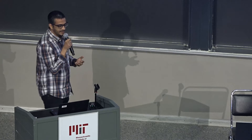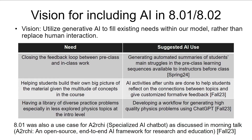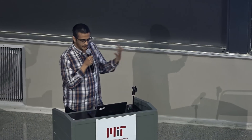We came up with a few gaps or needs that we wanted to see if generative AI would help us with. I'll focus on these three needs: first, closing the feedback loop between the pre-class and the in-class portion of the course; second, helping students develop their own big picture of the course as the semester unfolds; and third, generating physics problems for unconventional topics. We also used Archie — a chatbot specialized to our 8.01 content — but there was a talk about Archie this morning, so I'll focus more on the other usages.